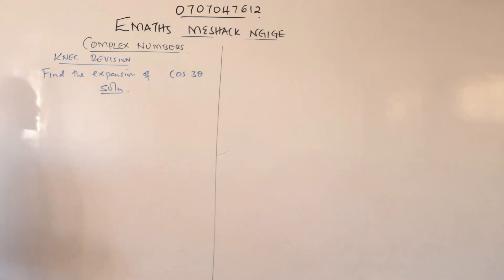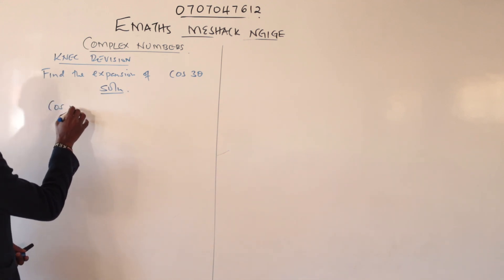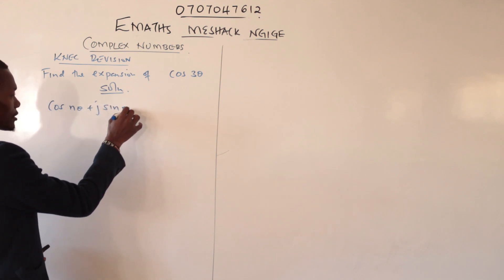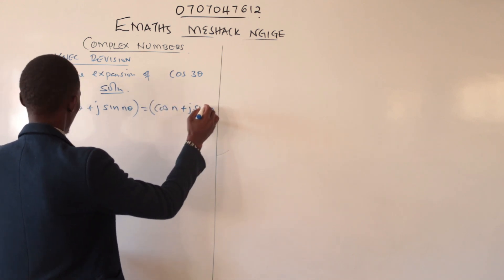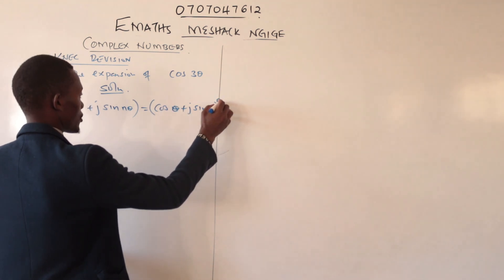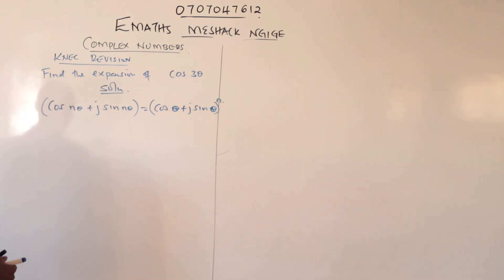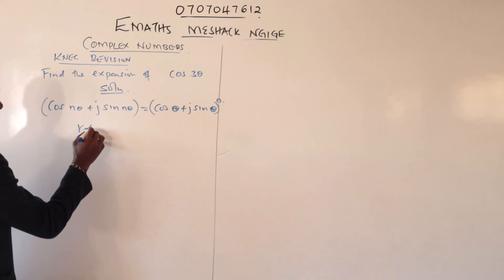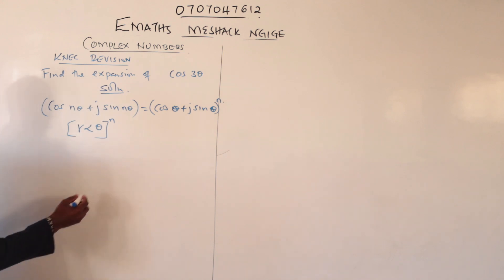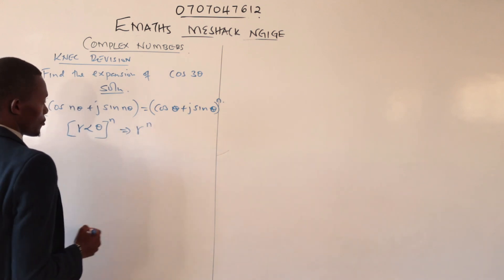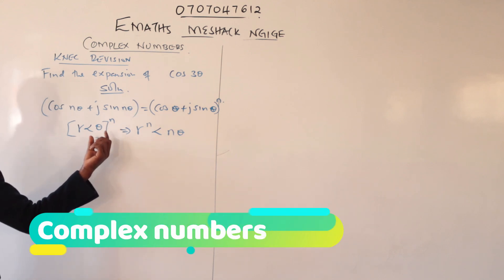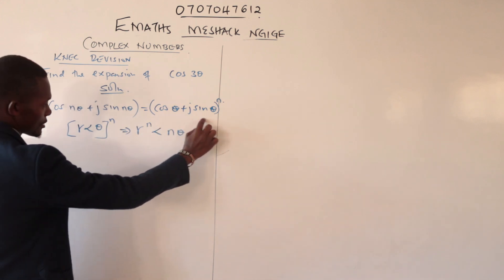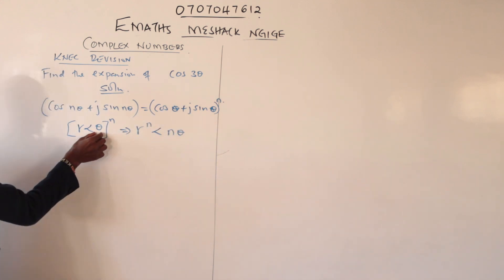We know from De Moivre's theorem that cos(nθ) + j·sin(nθ) can also be written as cos(θ) + j·sin(θ) all to the power n. Generally, De Moivre's theorem states that if you have r at angle θ to the power n, this just implies r to the power n at angle nθ — you multiply θ by n.